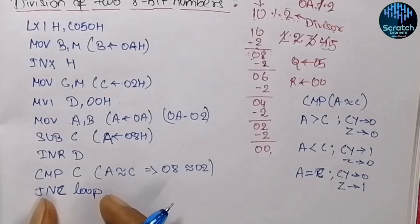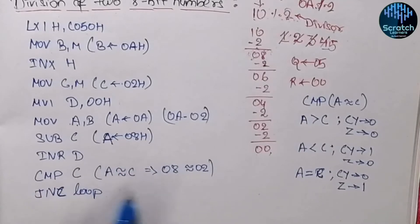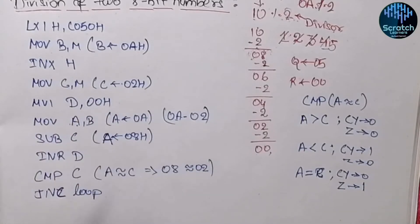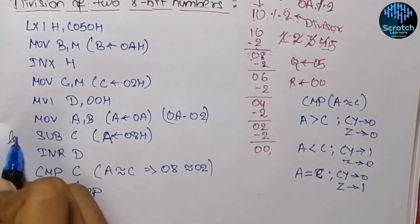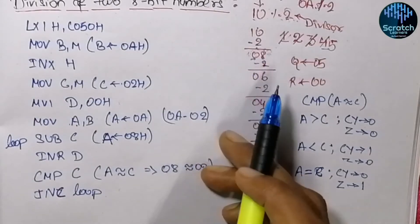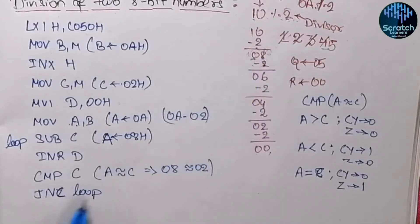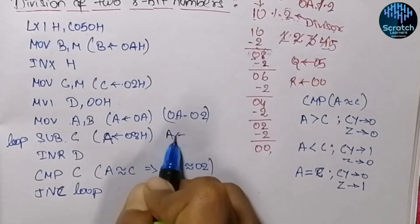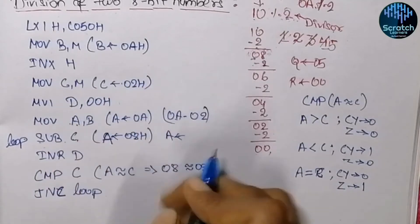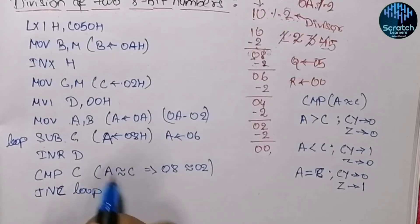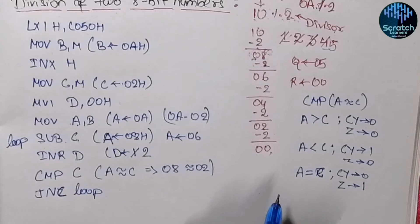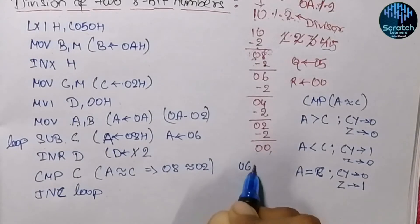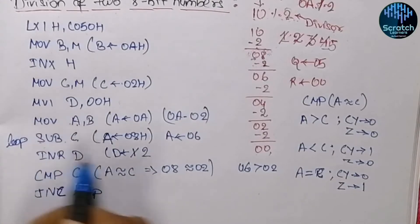We use the JNC instruction — jump if no carry — so as long as accumulator is greater than or equal to C, we jump back to the SUB instruction and repeat the loop. This means the loop continues subtracting: accumulator becomes 08 minus 02 = 06 hex and D increments to 2. Since 6 is greater than 2, we jump again, subtract to get 04 hex, D increments to 3.